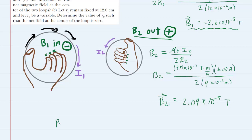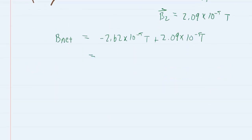Now the net magnetic field will simply be the sum of these two. Keep in mind that B1 was negative, so we're going to take the negative 2.62 times 10 to the minus 5 Tesla and add that to the 2.09 times 10 to the minus 5 Tesla. When you do that you should get about negative 5.24 times 10 to the minus 6 Tesla. The fact that our answer was negative means that the overall net magnetic field will be pointing into the page.